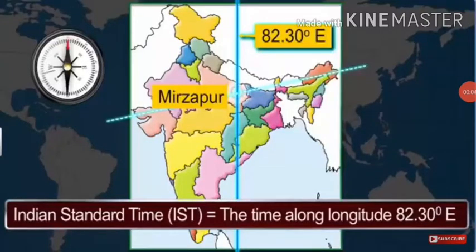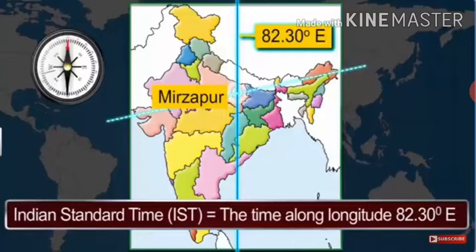Why do we have standard time? The local time of places on different meridians are bound to differ. For example, it will be difficult to prepare a timetable for trains which cross several longitudes. In India, there will be a difference of about 145 minutes in the local times of Dwarka in Gujarat and Dibrugarh in Assam. It is therefore necessary to adopt the local time of some central meridian of a country as the standard time for the country.